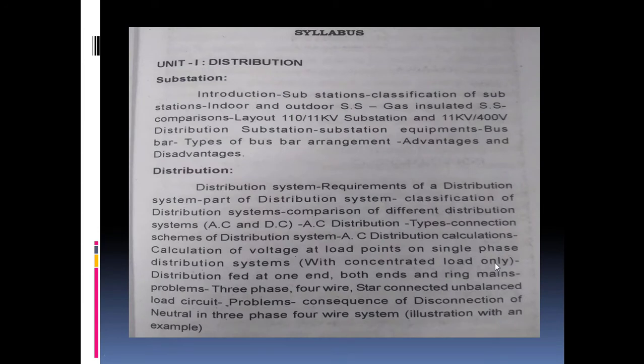This is one kind of Utilization. First unit is Distribution — also called Power System 1 — covering Generation, Transmission, and Switching Gear. The Switching Gear is called Distribution, and Distribution is called Substation.